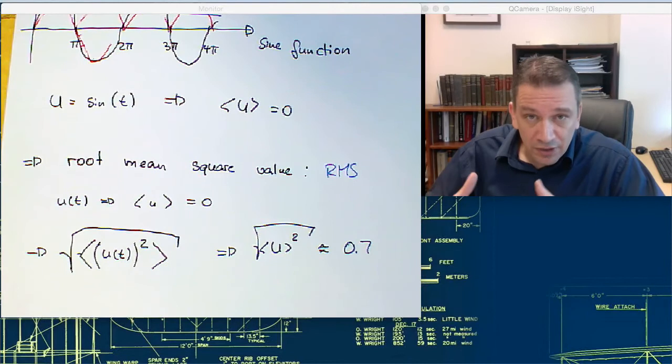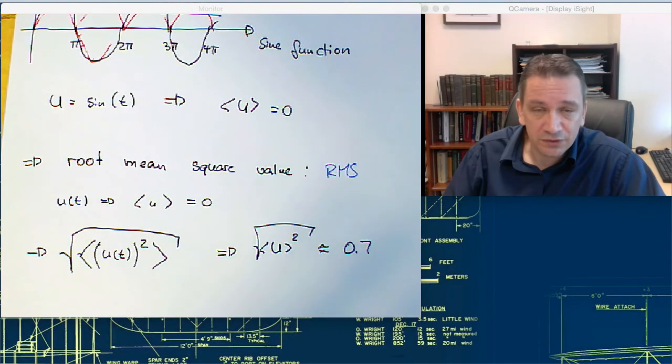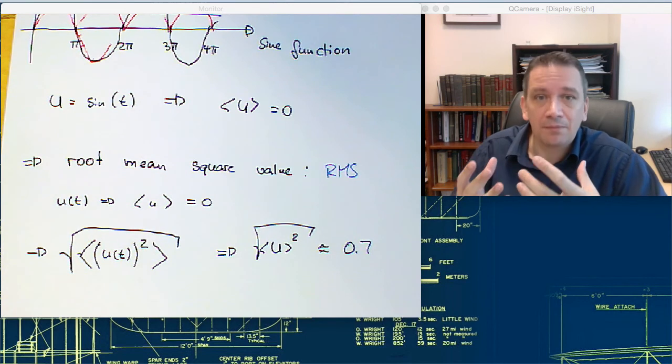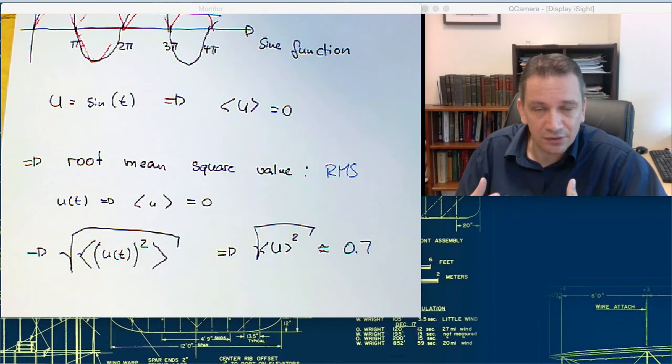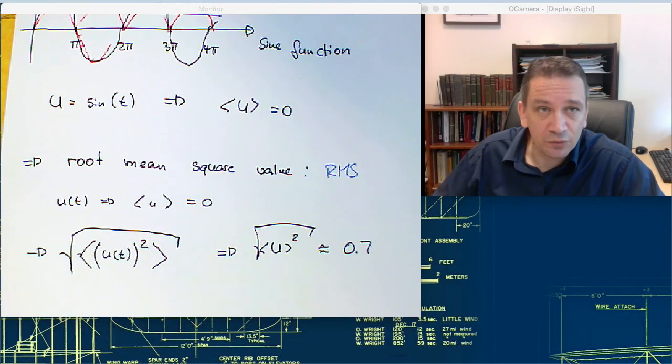So the root mean square value are also called the RMS value of a fluctuating part. So with that, you have already two important parts. You have the mean value, which gives you the mean velocity field. And the root mean square value, which gives you something about the amplitude of the fluctuating part. But now we have a look at a few more things.